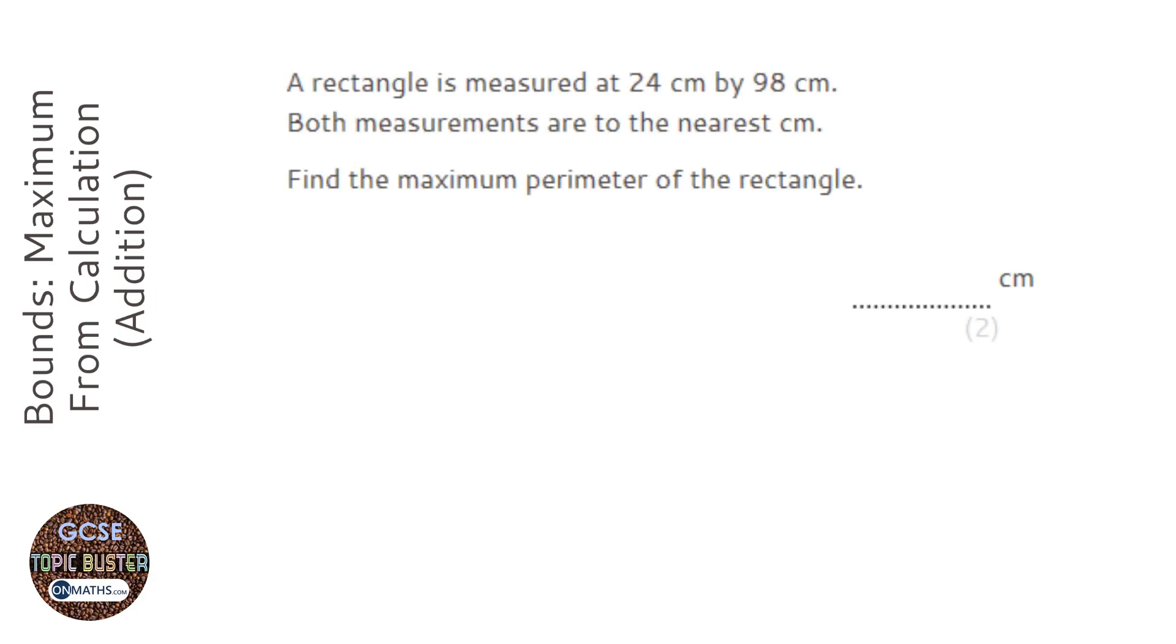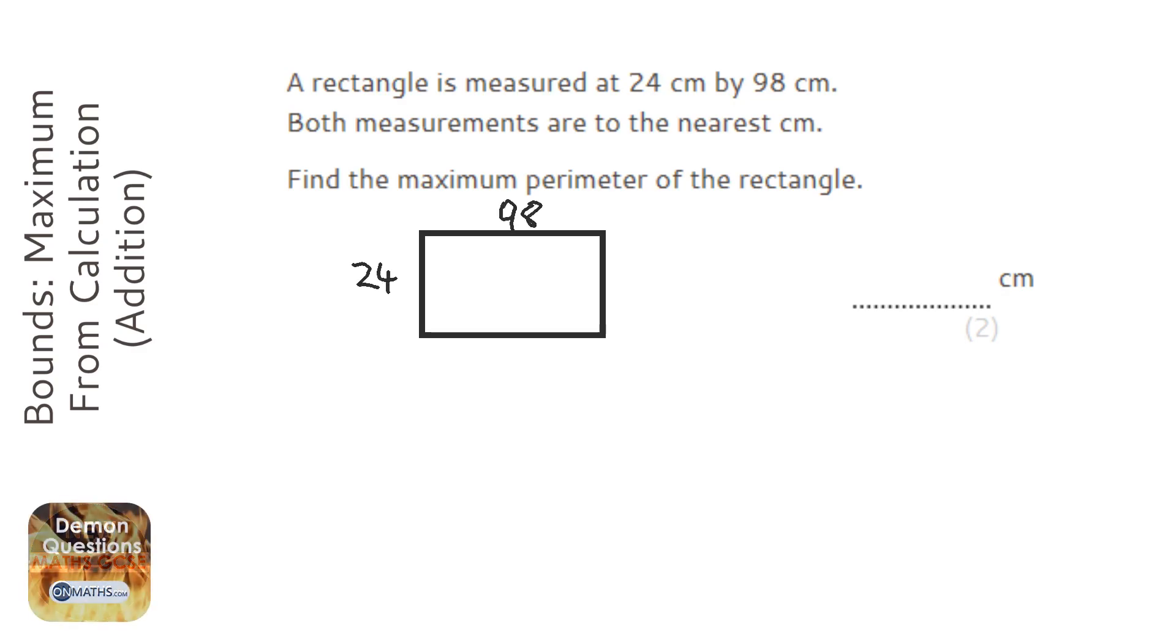OK, so it might look like all we need to do with this question is draw a rectangle. We've got 24 centimeters on this side, 98 on this side, therefore it's another 24 and another 98 and we add them all together and we get the answer.